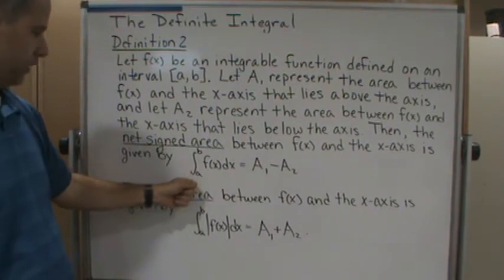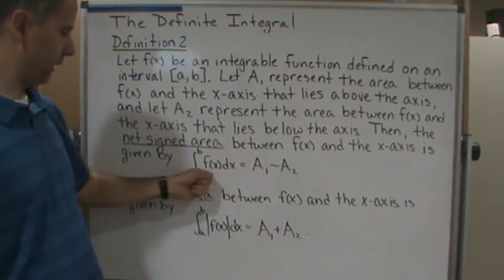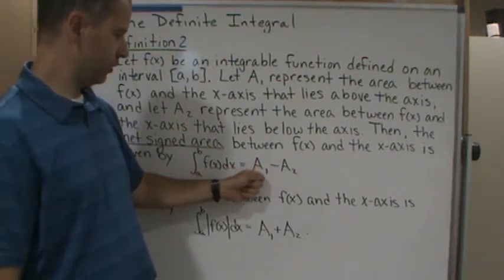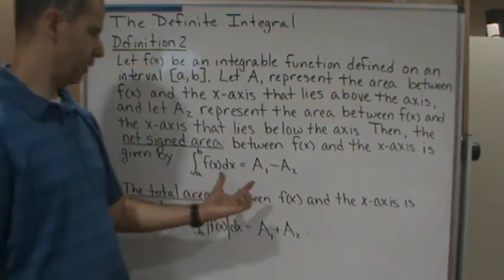That we've seen before, right? Just the integral from a to b, so the definite integral from a to b of f(x)dx is equal to a1 minus a2. We take all of the areas above the curve and subtract the area below the curve.